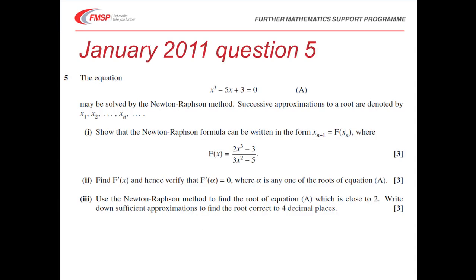Let's look at another question — this one is on Newton-Raphson. We've got an equation where successive approximations are denoted by X1, X2, and so on. We've got to show the Newton-Raphson formula can be written in the form F(x) = (2x³ − 3) / (3x² − 5). We've then got to find F'(x) and verify that F'(α) = 0 — remember that was the condition for quadratic approximation. And having verified that, we use the Newton-Raphson method to find the root close to 2, writing down sufficient approximations to find the root correct to four decimal places.